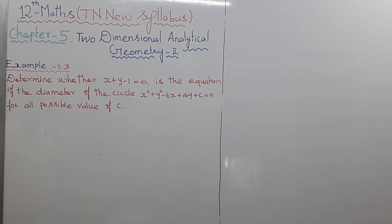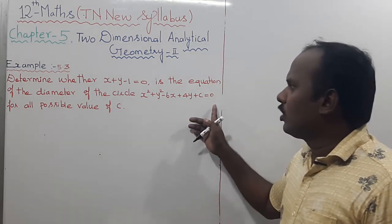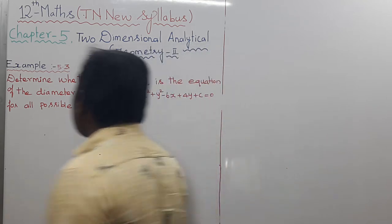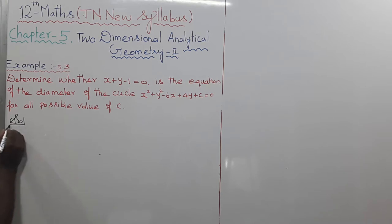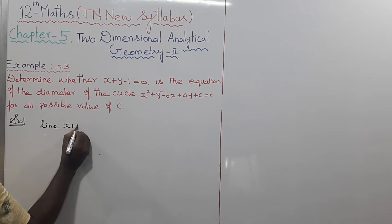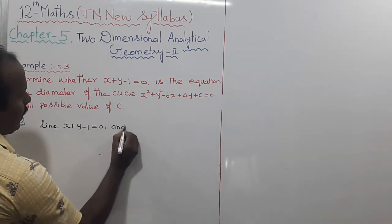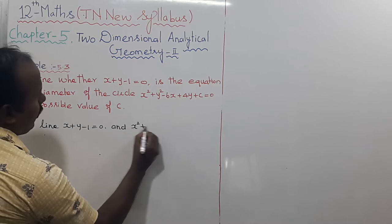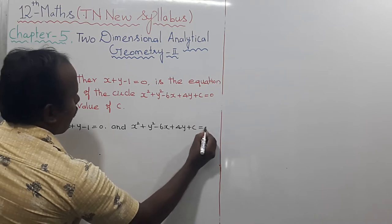Example 5.3. Determine whether x plus y minus 1 equals 0 is the equation of the diameter of the circle x squared plus y squared minus 6x plus 4y plus c equals 0. Find all the possible values of c. The given line is x plus y minus 1 equals 0, and the circle is x squared plus y squared minus 6x plus 4y plus c equals 0.